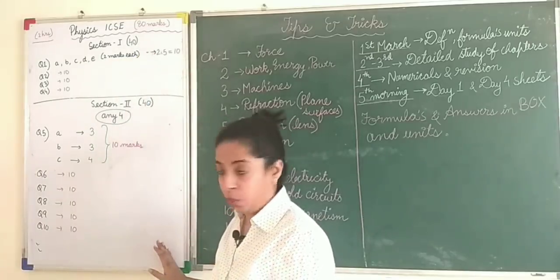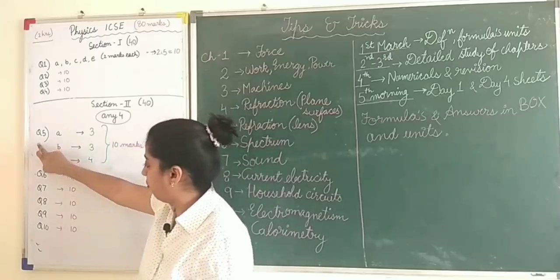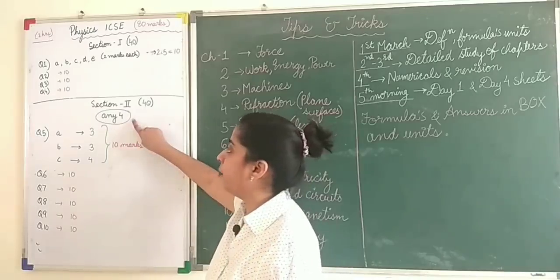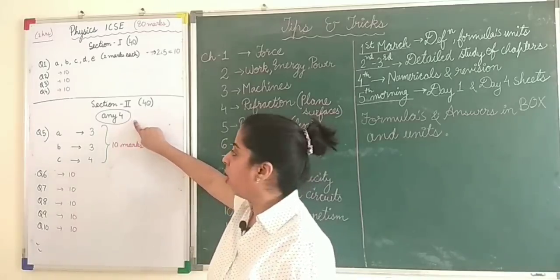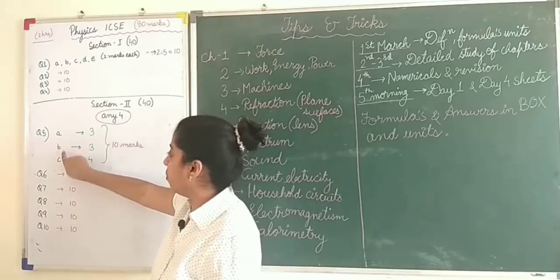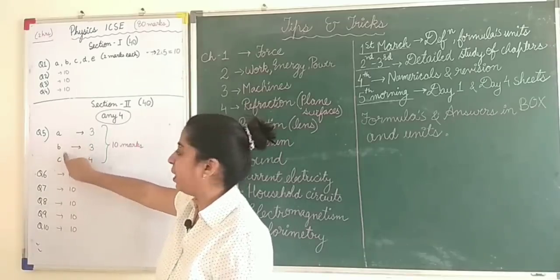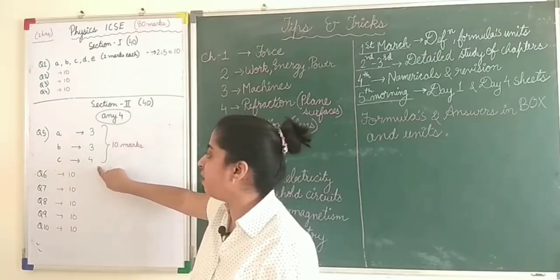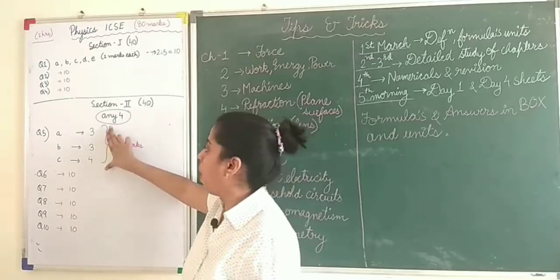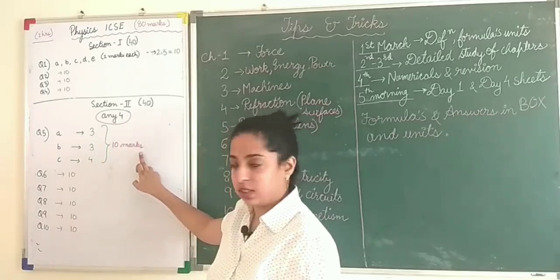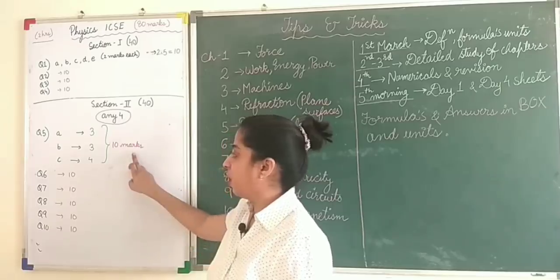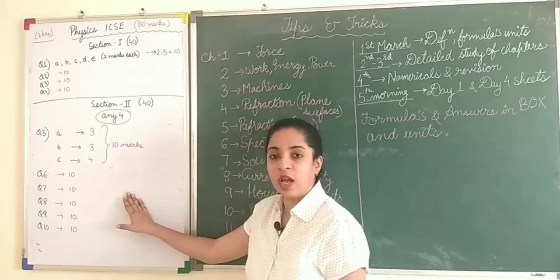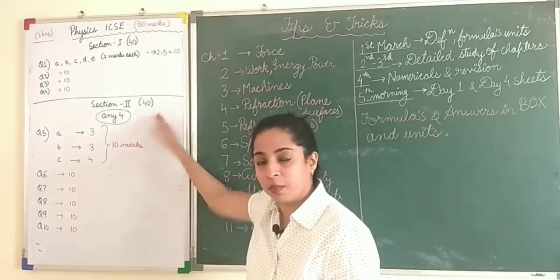In Section 2, you will have questions from 5 to 10 — a total of 6 questions — out of which you have to attempt any 4. Each question is divided into 3 parts: A carries 3 marks, B carries 3 marks, and C carries 4 marks, making 10 marks per question. So 4 questions into 10 is 40. Section 2 is also 40 marks.